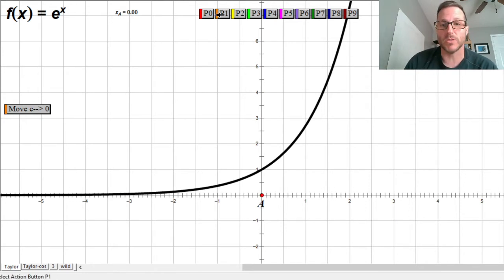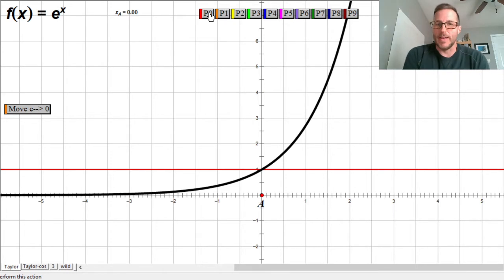If we just graph the function y equals one, boom, there it is. Now, it's not a great representation of e to the x. We have all of this error between the function y equals one and the function y equals x.